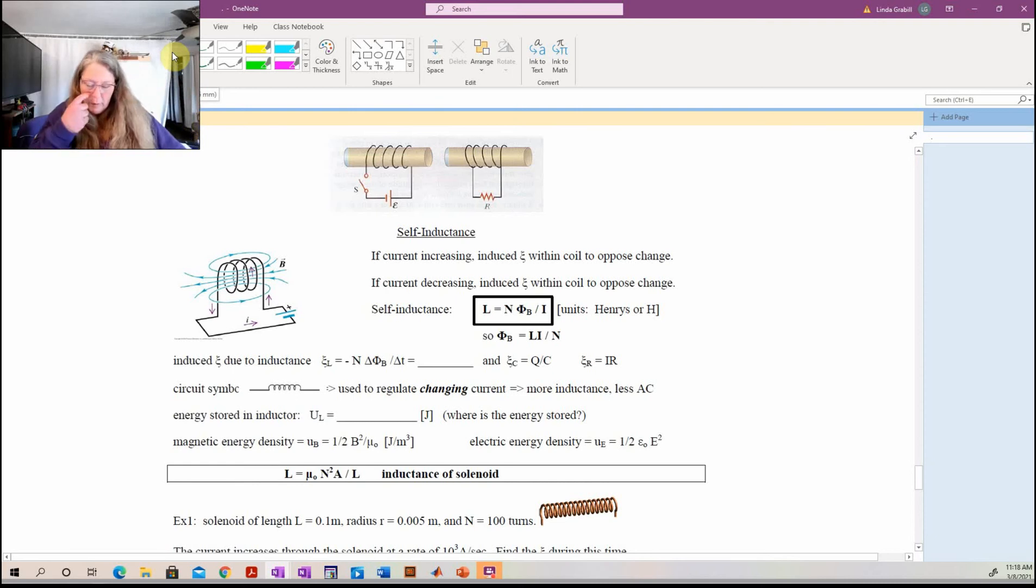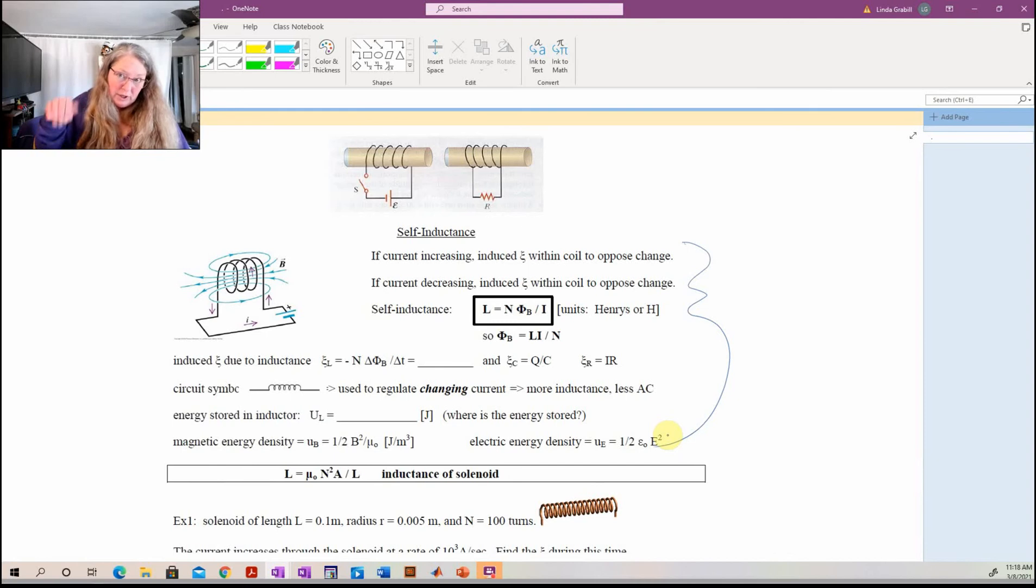This will be our last video before Wednesday. Wednesday what we're going to do is focus on this little section, just because then we can talk about the change in direction of the magnetic field and therefore the induced current in the coil, which has to do with the coils, the way they're wound, and therefore the direction of the magnetic field. It's just something that's going to be easier discussed when you all can ask me questions than me doing a video of it and you yelling at the screen. So we'll do that Wednesday.